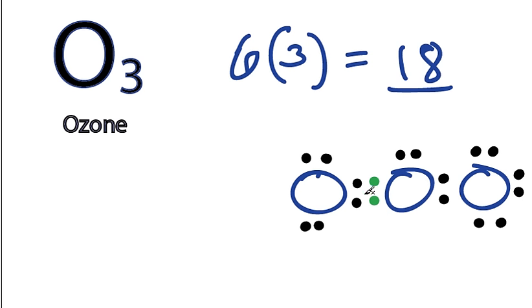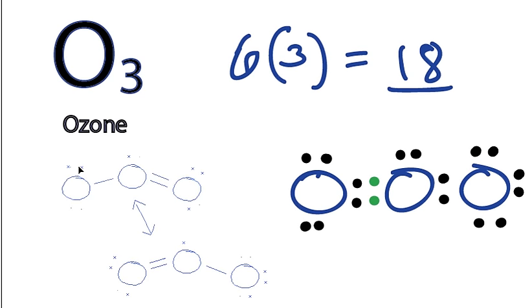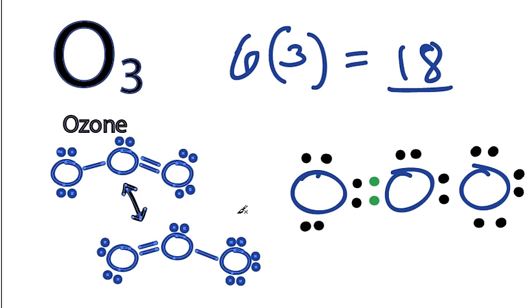The only problem is we could have had the double bond over here, and the single bond here. Both are correct. When you have structures where you can draw it 2 different ways, those are called resonance structures. And we end up with something like this, right here, where we draw it both ways, and we put an arrow between to show that it could be either - you could have a single here and a double here, or a double here and a single here. It's really the same thing.